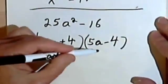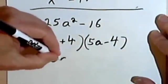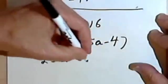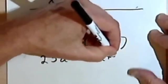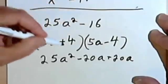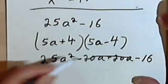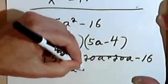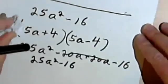Again, we can check this by multiplying it back. 5a times 5a is 25a squared. 5a times negative 4 is negative 20a. 4 times 5a is positive 20a. And 4 times negative 4 is negative 16. These terms in the middle cancel. You're going to get 25a squared minus 16. Okay, one more.